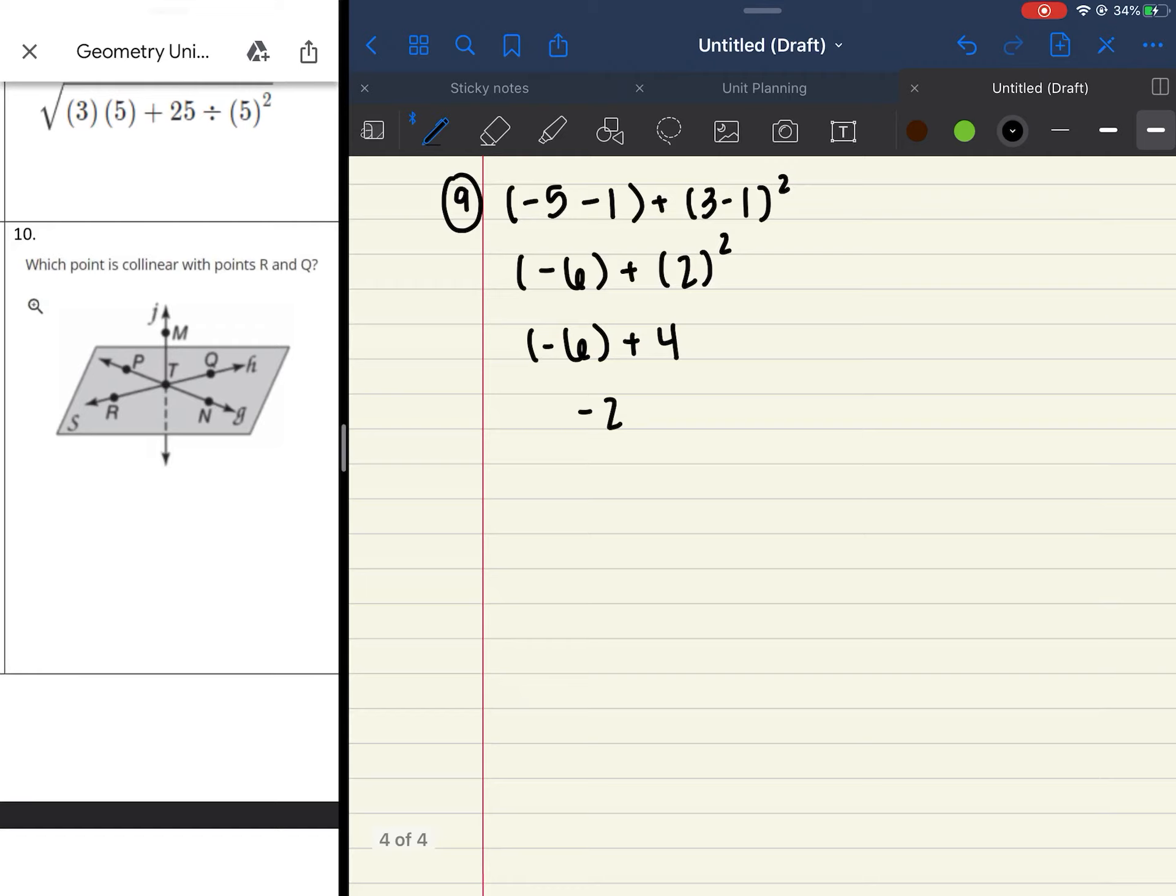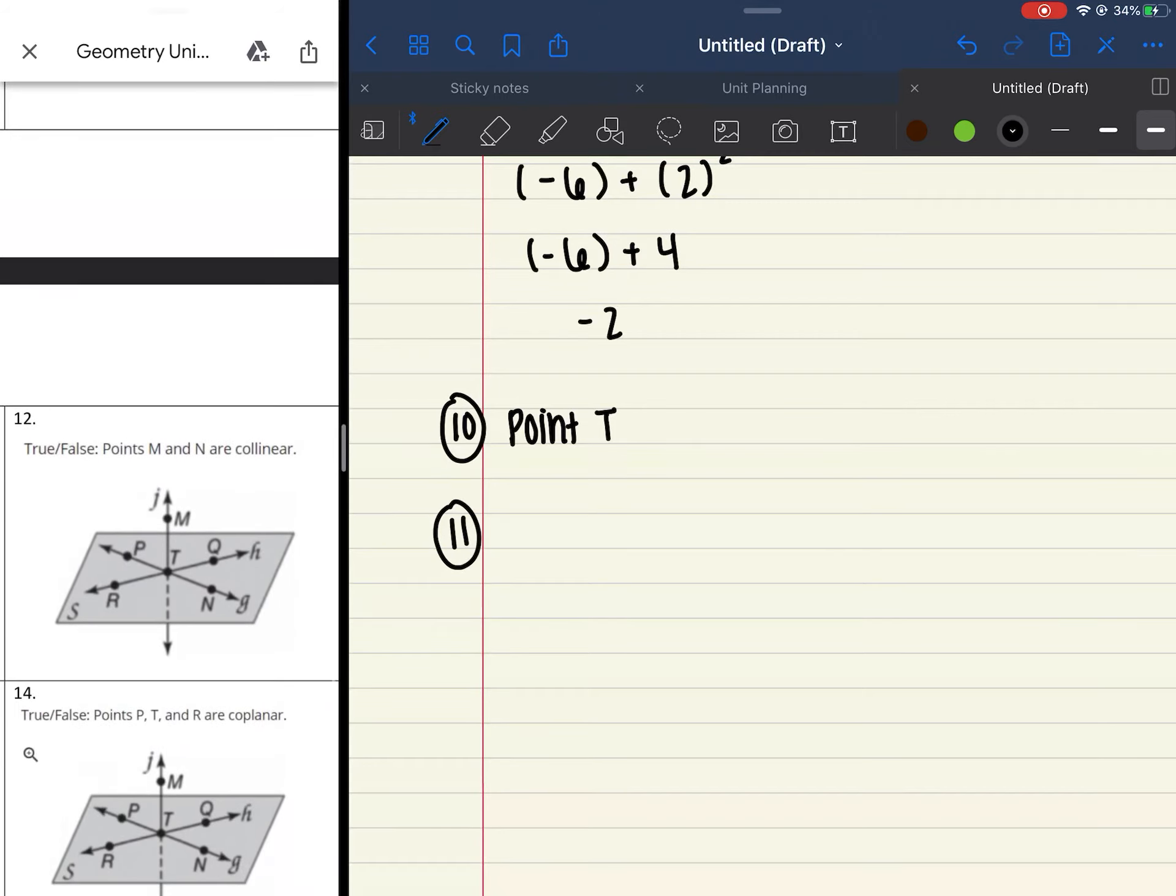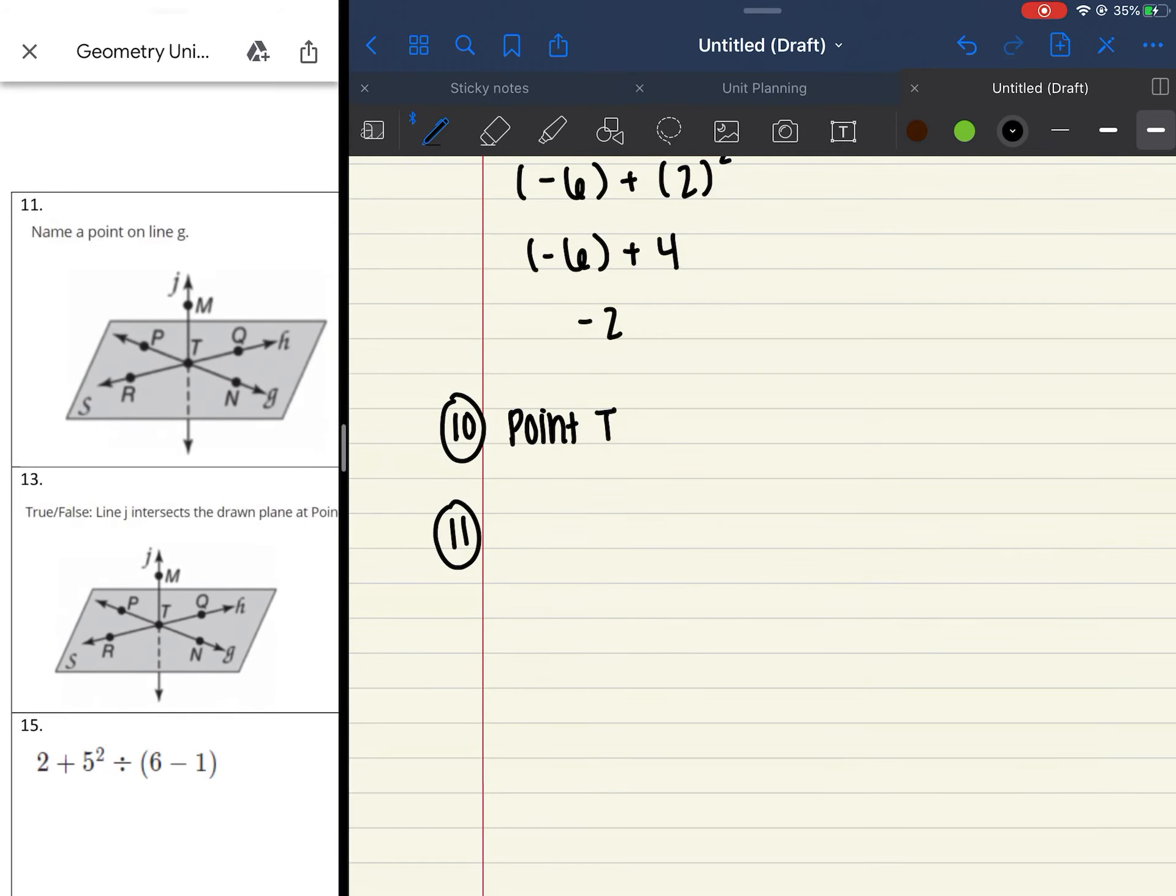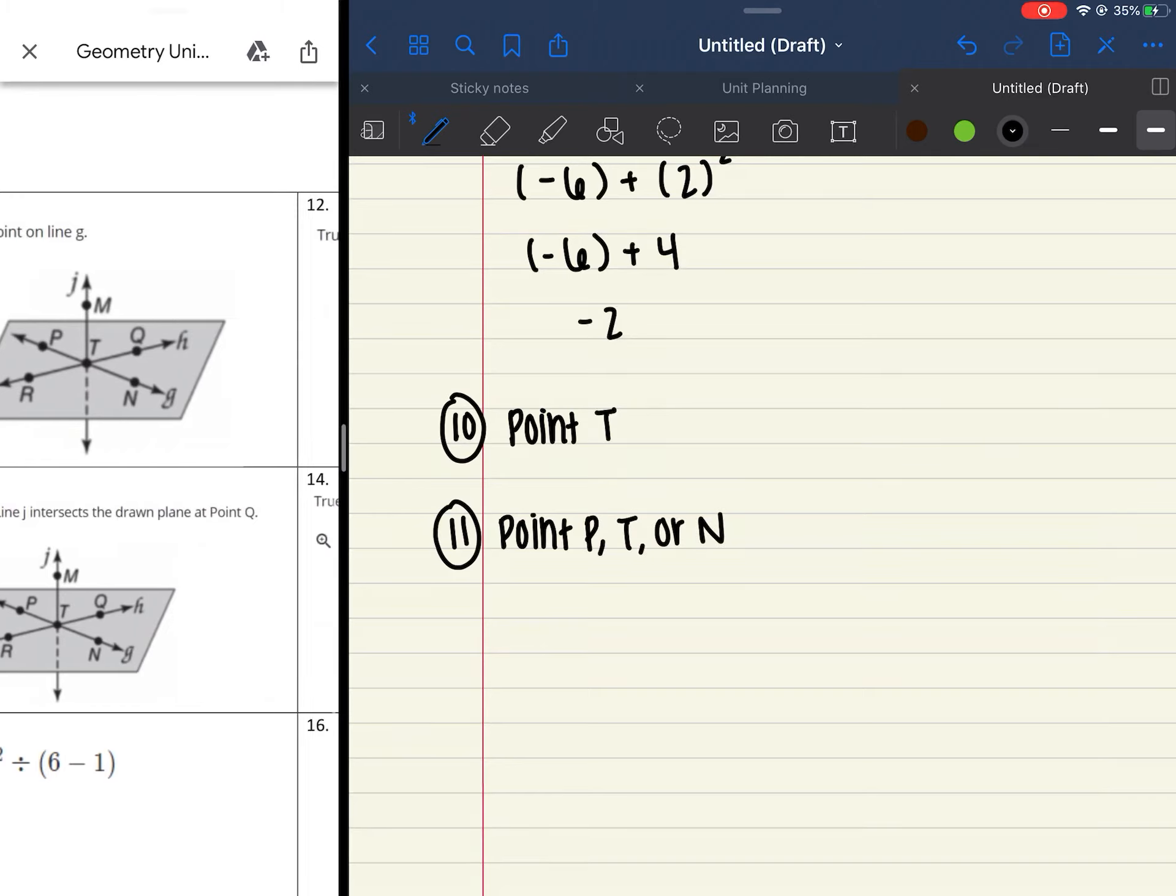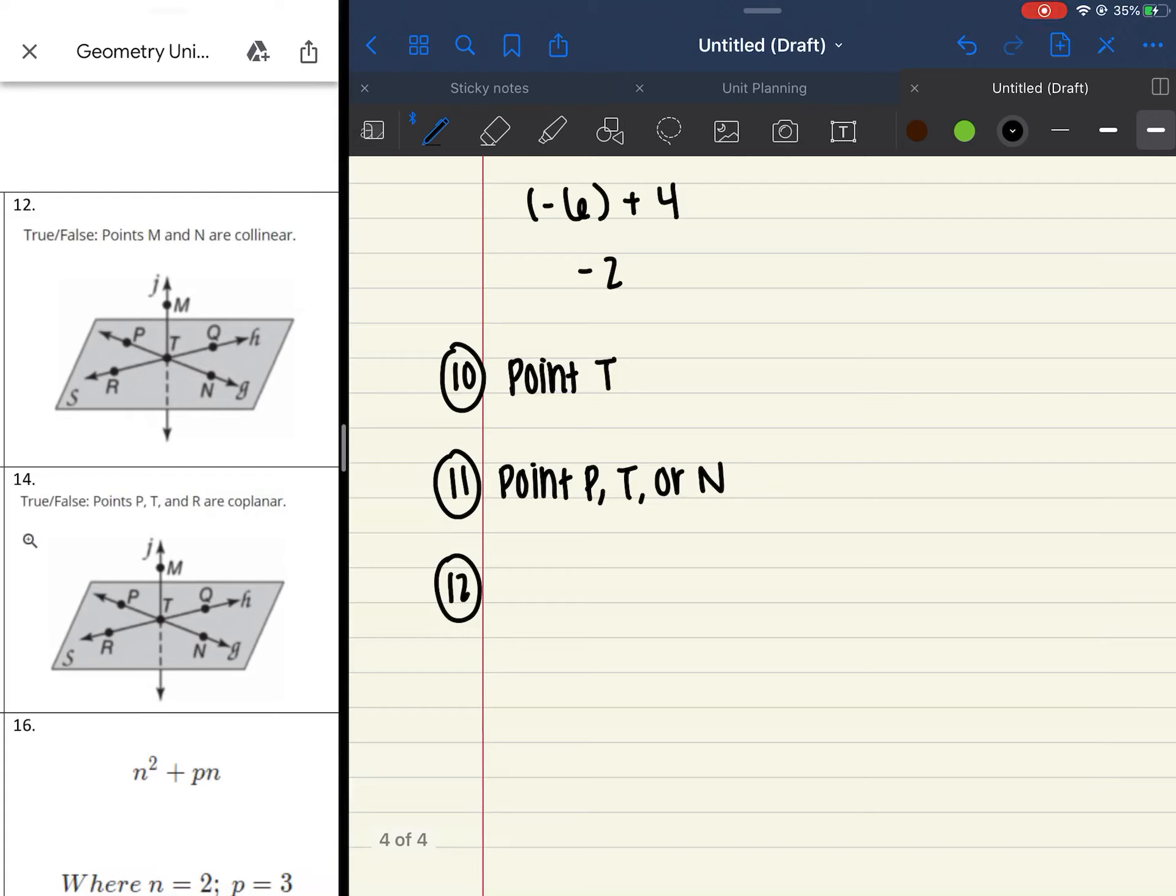So the next couple 10, 11, 12, and 13, I think, were the ones with the diagrams for points, lines, and planes. So I asked you, which point is collinear with R and Q? And the first thing you had to do was look at R and Q, look at that line, and see what other point is on there. So when I look at R and Q, the only other point on that line is point T. Number 11 is another diagram. And I asked you to name a point on line G. G is that little cursive letter. So there are 3 points on that line. So you could have said it was point P, T, or N. You had to look at your multiple choice answers, and whichever one that was is what you would circle. Number 12. True or false, I asked you if points M and N are collinear. I gave you 2 points only. And you should know that 2 points are always collinear, so that one should have been true.